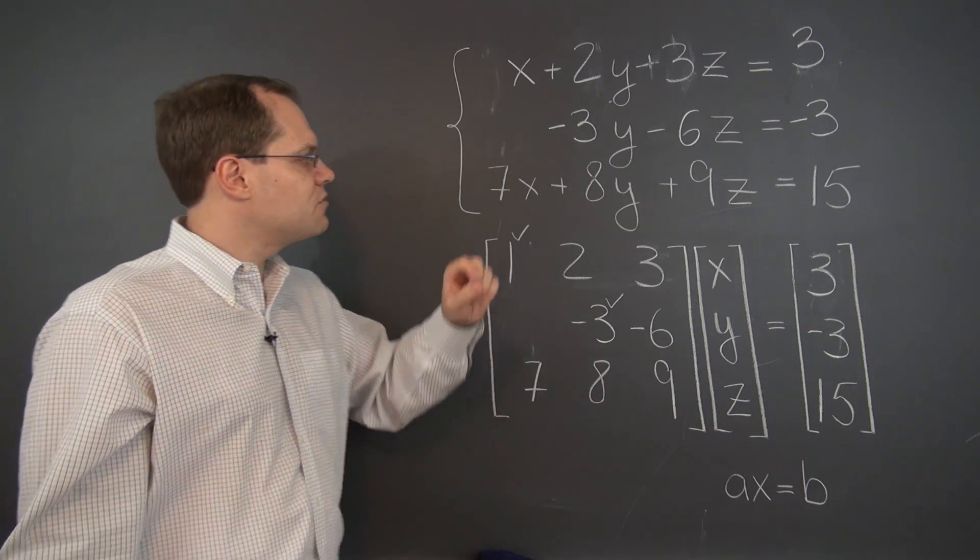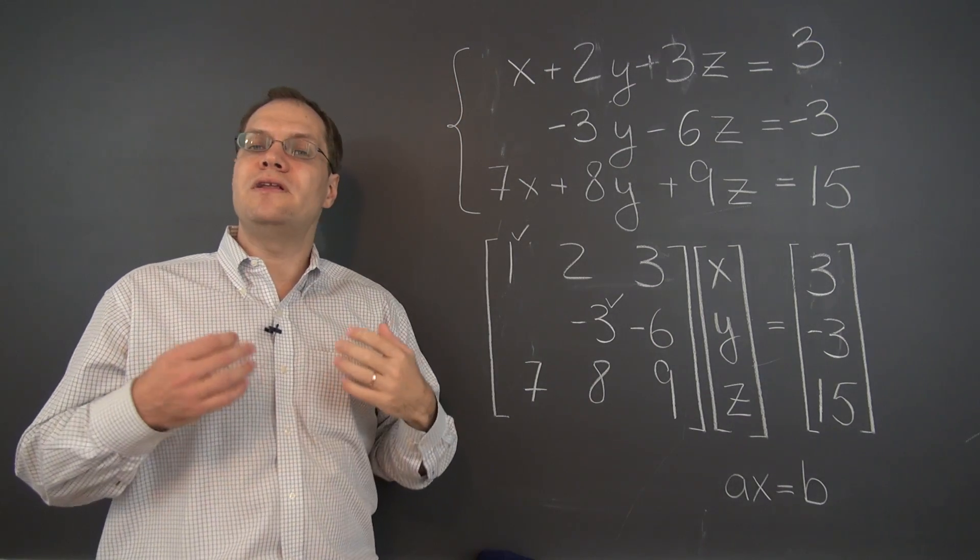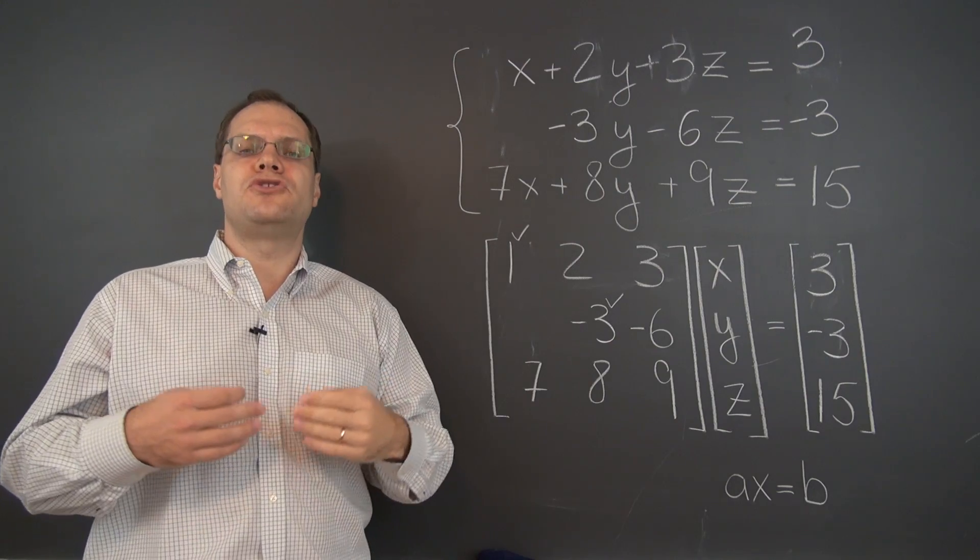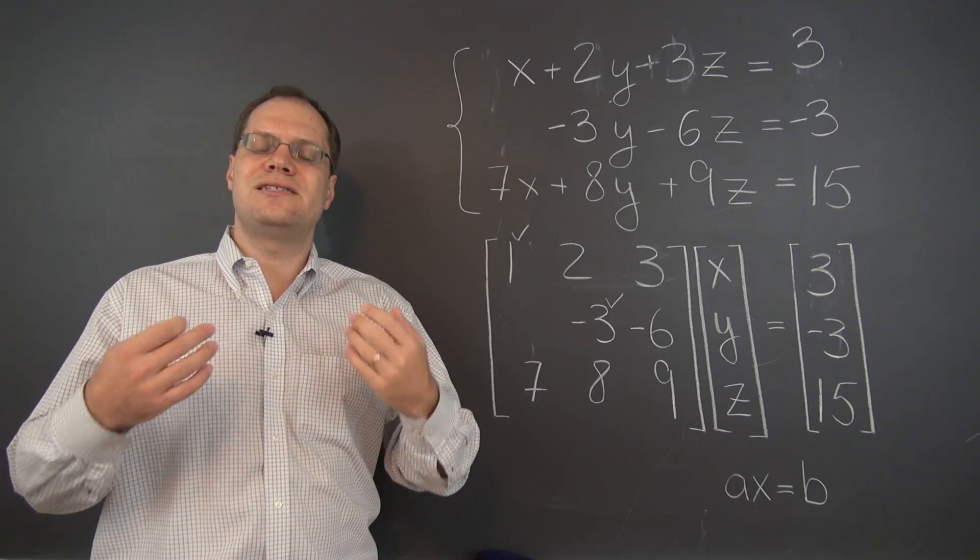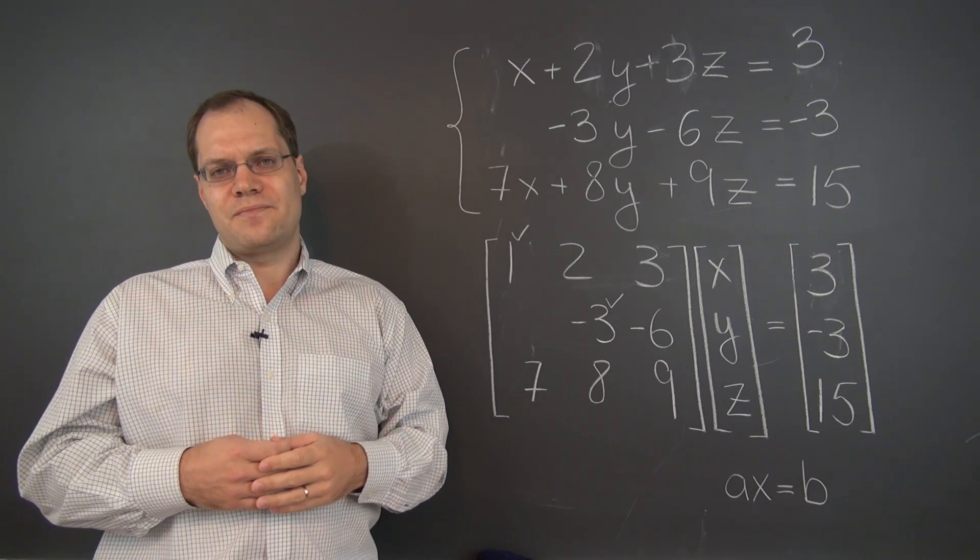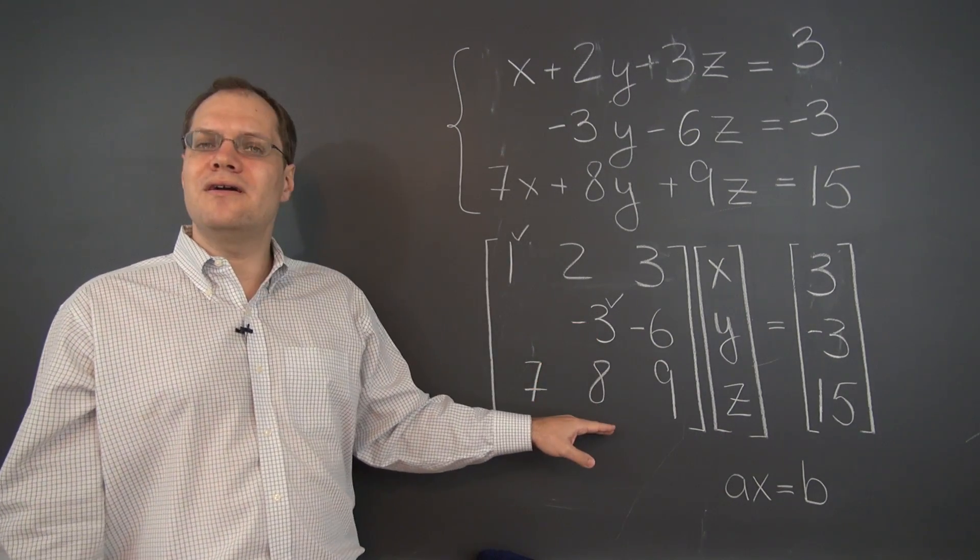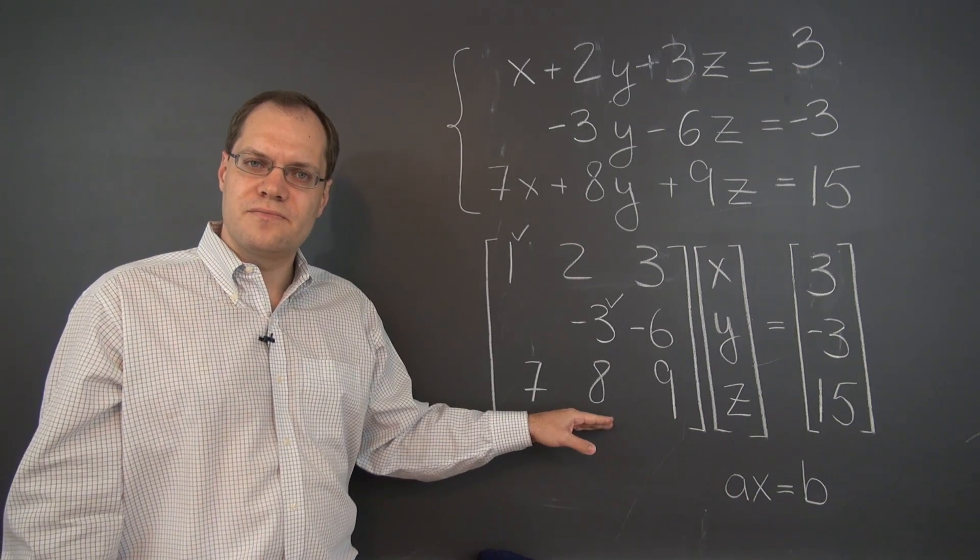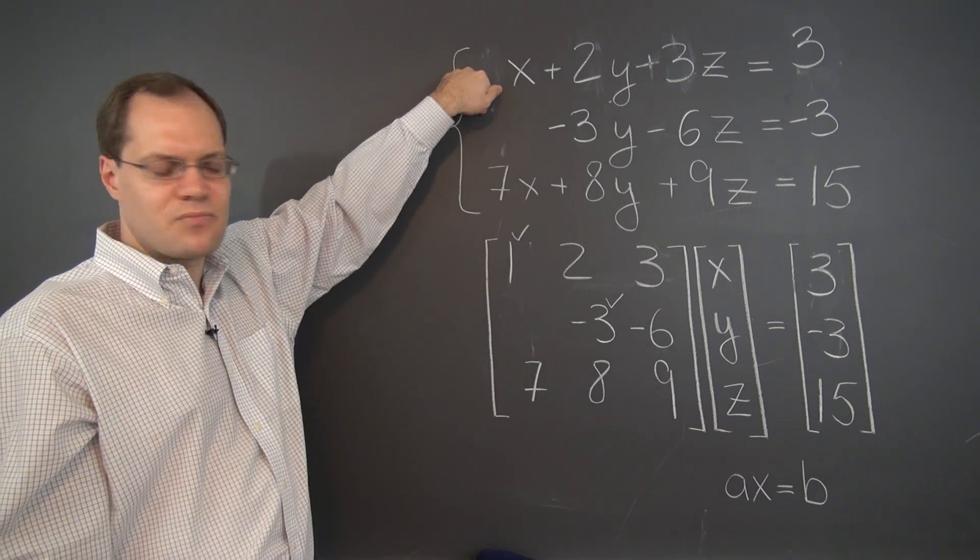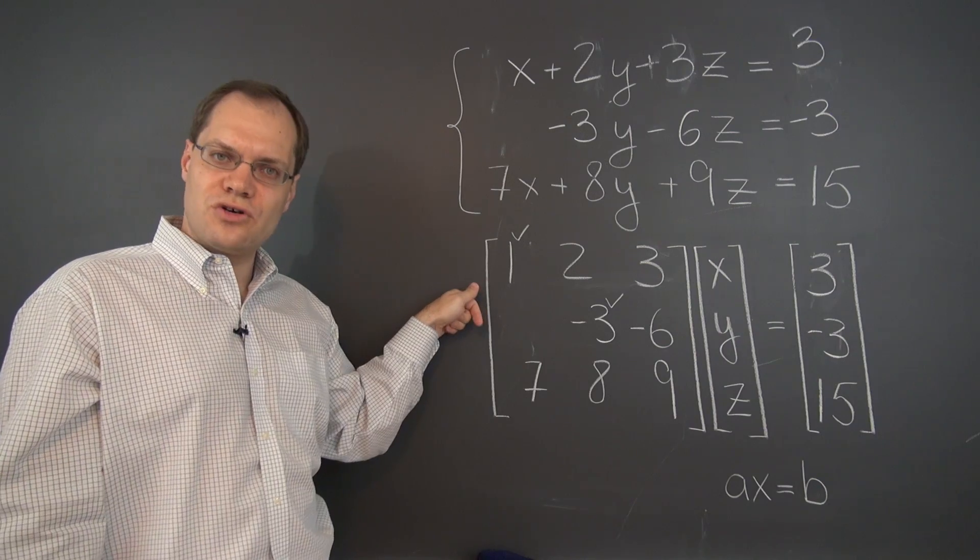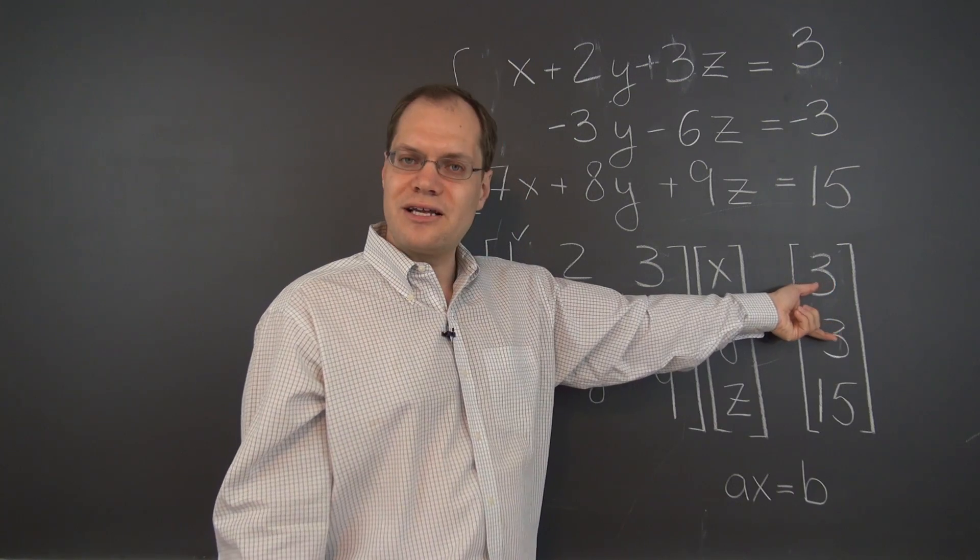So those are the two operations that we've learned so far. There is one more. In terms of equations, it's switching two equations around. Now at this point, it may not be obvious how that operation can be used to make a system simpler, because you end up with the same set of equations. But you'll see, there is a standard way of doing Gaussian elimination, a conventional way, that calls for the pivots to appear in specific rows. And in order to achieve that, you may sometimes need to switch equations around.